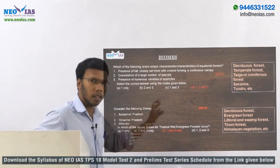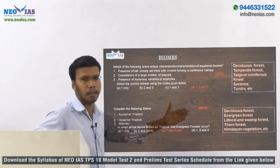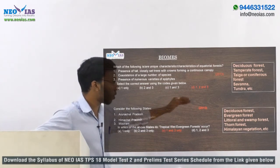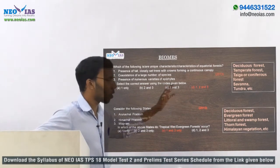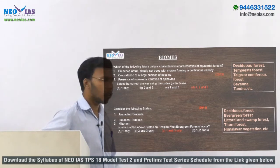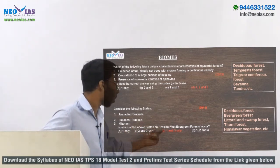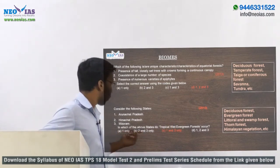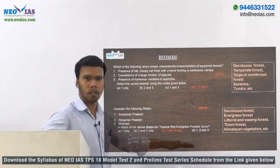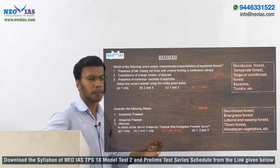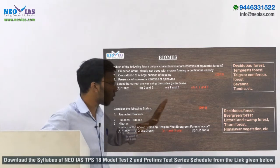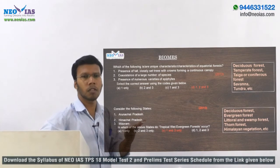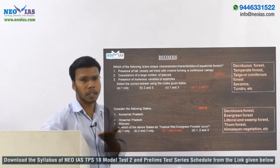You also need to study which areas of India have these types of forest — Deciduous, Evergreen, Littoral and Swamp, Thorn Forest, Himalayan Vegetation, etc. — because UPSC may ask in which states a particular vegetation type occurs. For this, you can refer to the natural vegetation module of your NCERT textbook, which also has a map, or the Neo-IAS biomes module.